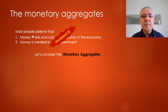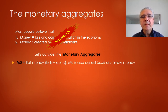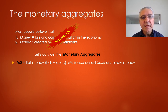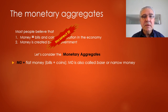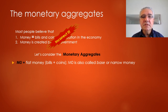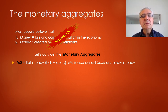Let's consider the monetary aggregates. If we look at what we call the monetary base or narrow money — this is what monetary economists call M0 — it is constituted of fiat money, which are the bills and coins in circulation. So at that level, the common wisdom is correct.